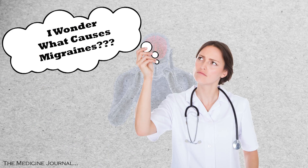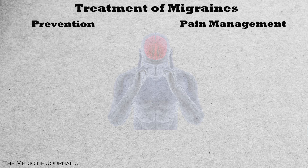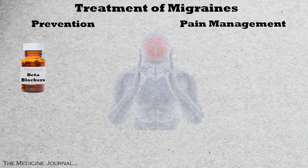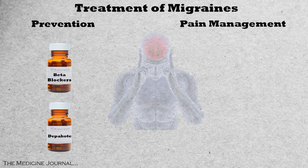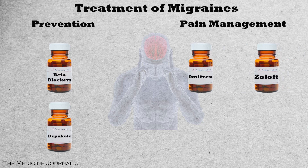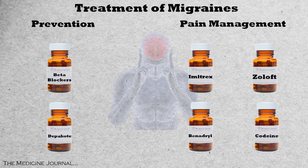Due to the fact that no one has nailed down the exact cause of migraines, treatment revolves around two things: prevention and pain management during an episode. Prevention can include drugs from many different classes, from beta blockers that treat high blood pressure to anticonvulsants like Depakote. Medications to manage symptoms during an attack can include triptans like Imitrex, drugs that affect serotonin levels, anti-nausea drugs like Benadryl, and pain medication like codeine.